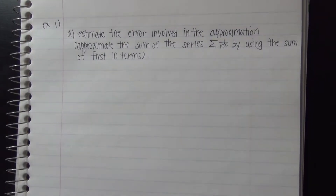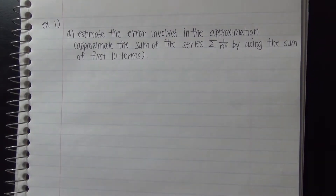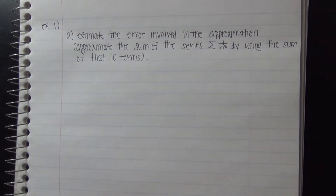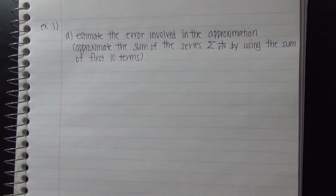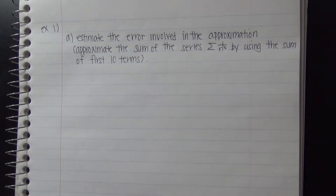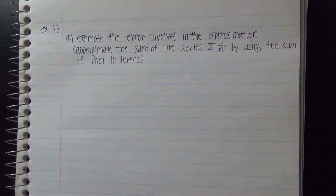Now we'll solve some example questions. The question is: estimate the error involved in this approximation. Approximate the sum of the series 1/n^5 by using the sum of the first 10 terms.